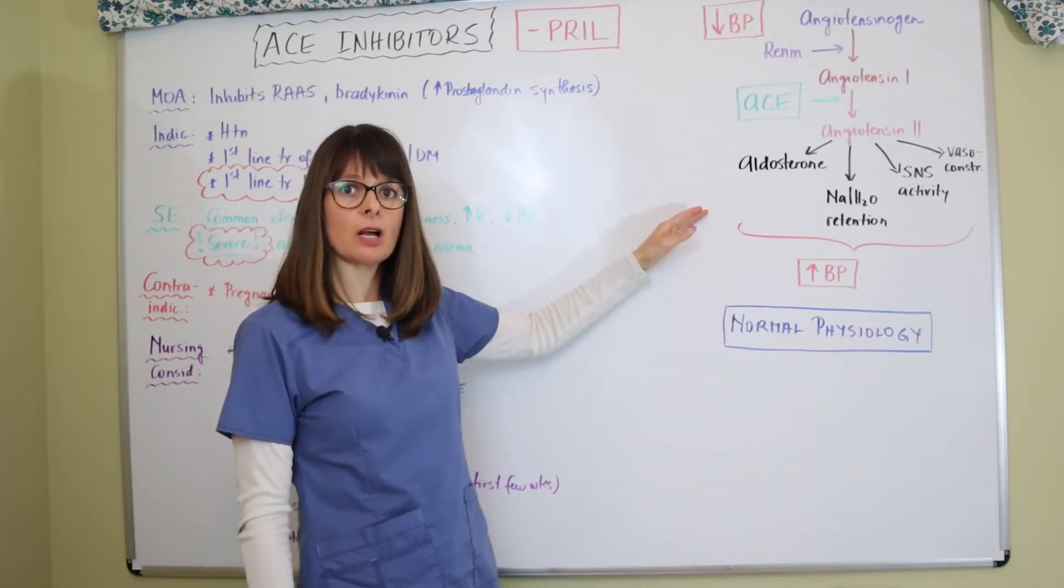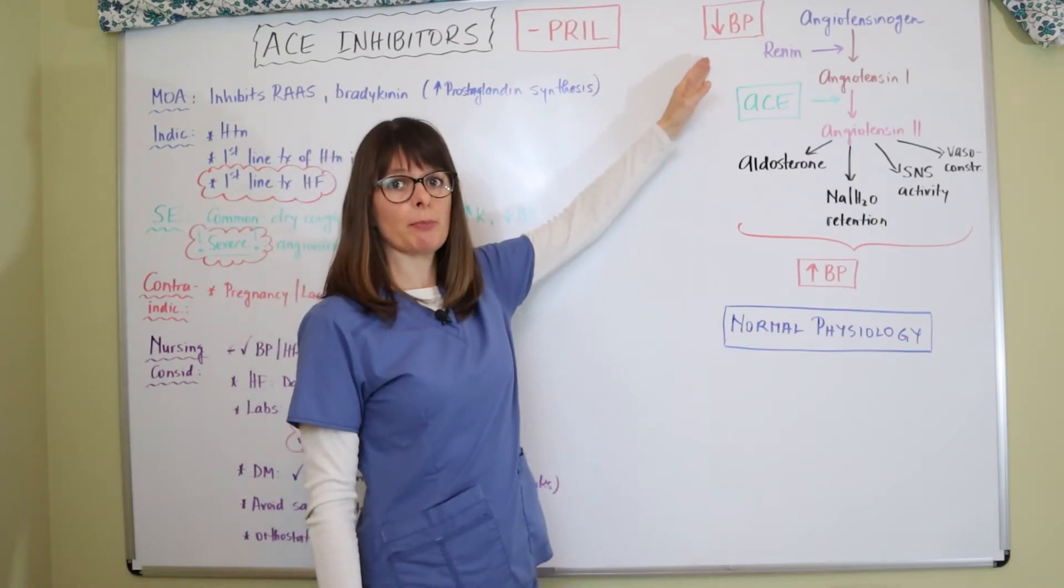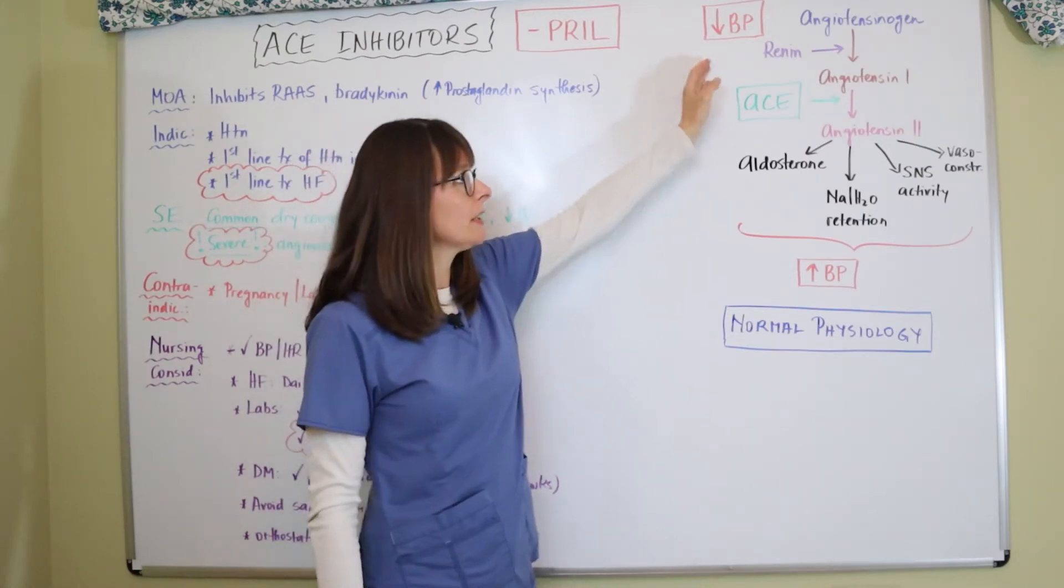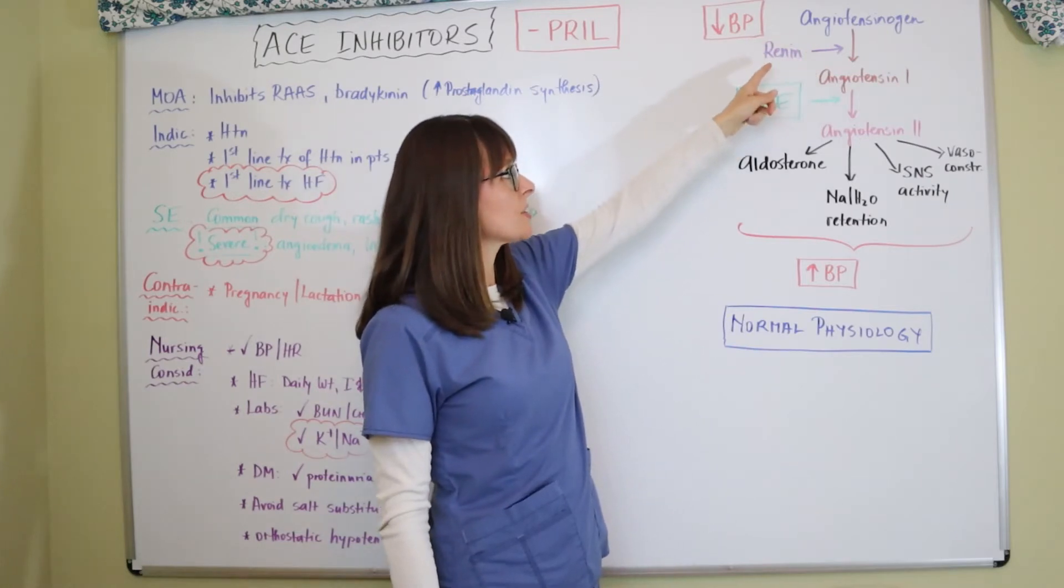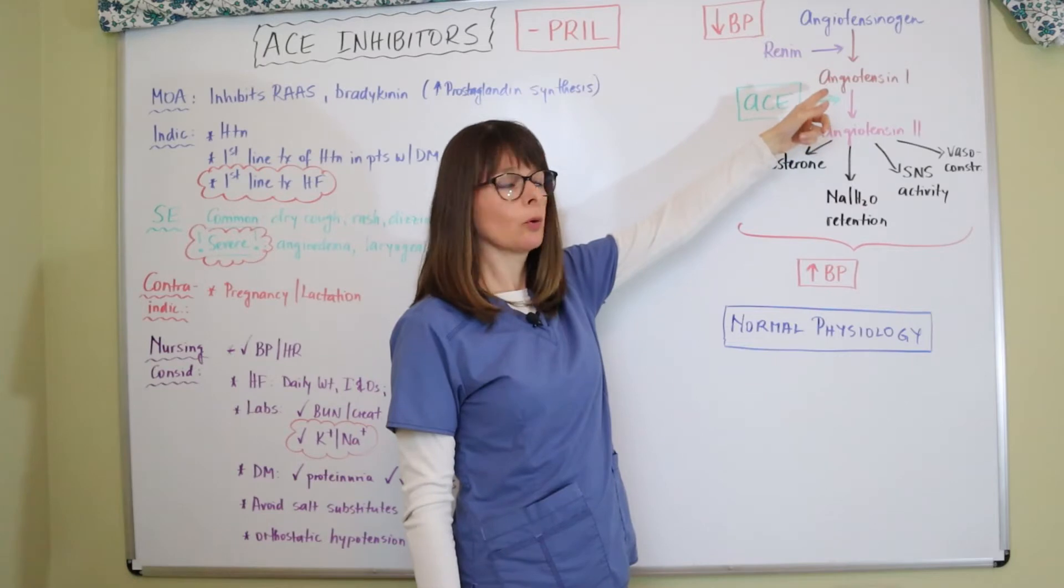Our bodies combine angiotensinogen with renin to convert it to angiotensin 1. Then ACE comes in, angiotensin converting enzyme.